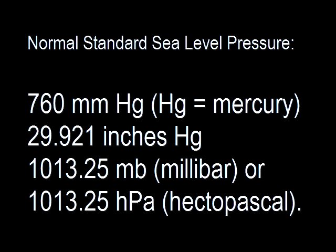The normal standardized sea level pressure can be expressed in different ways. It can be expressed as 760 mmHg or 29.921 inches Hg or 1013.25 mB or 1013.25 hectopascal. All these numbers refer to the same normal standardized sea level pressure.